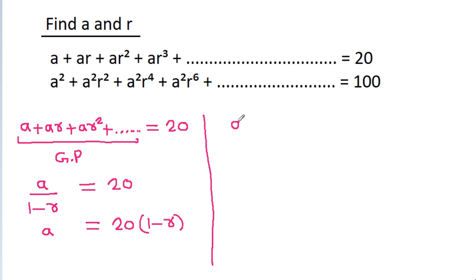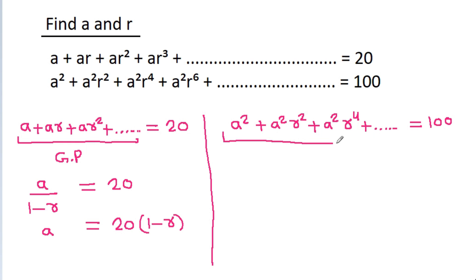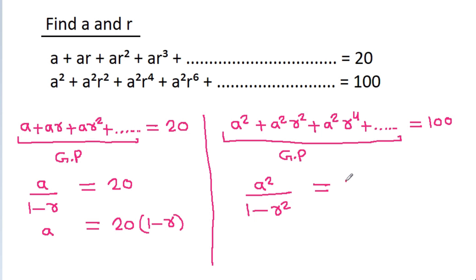We have a squared plus a squared r squared plus a squared r to the power 4 and so on is equal to 100. Again, this is in GP. The sum of the infinite GP gives a squared divided by 1 minus r squared, which equals 100. So a squared will be equal to 100 times 1 minus r squared.